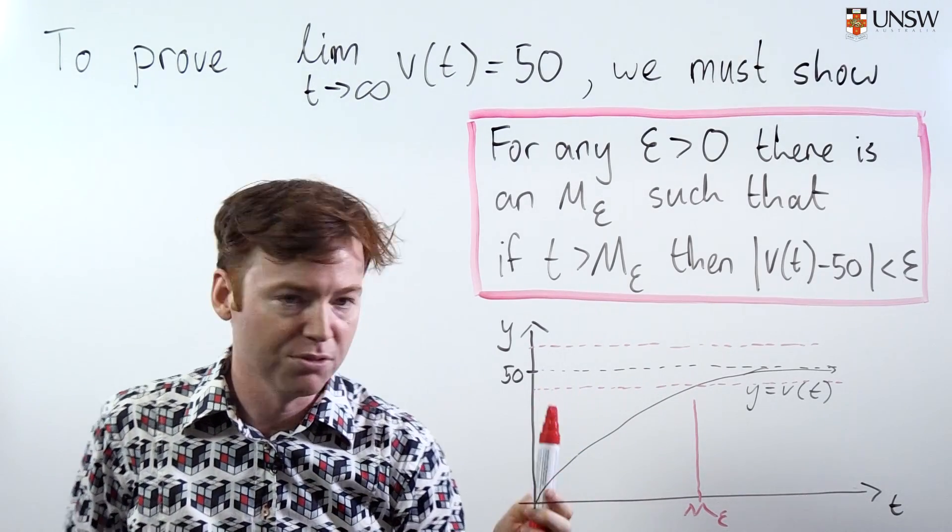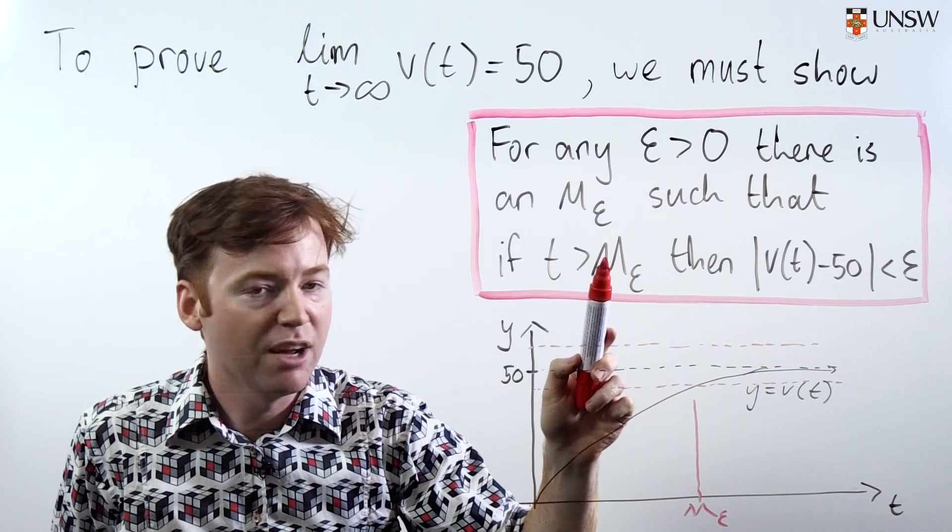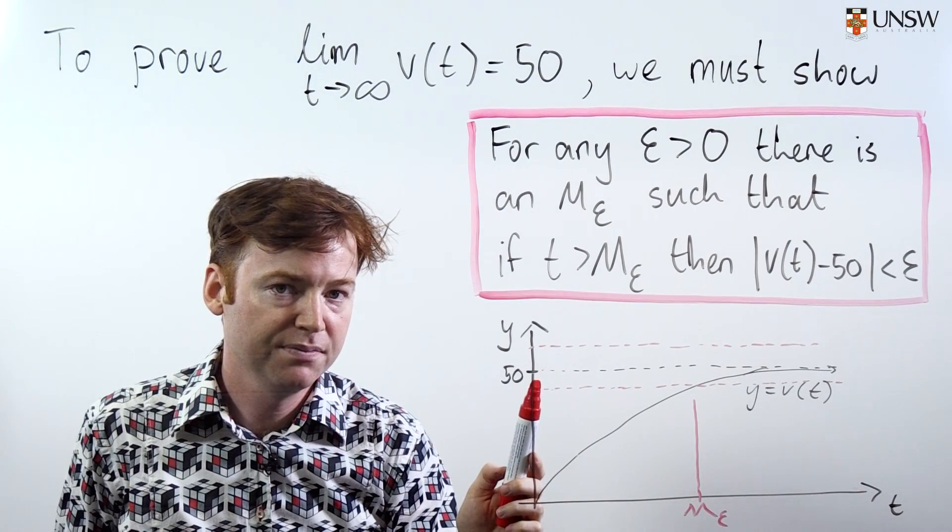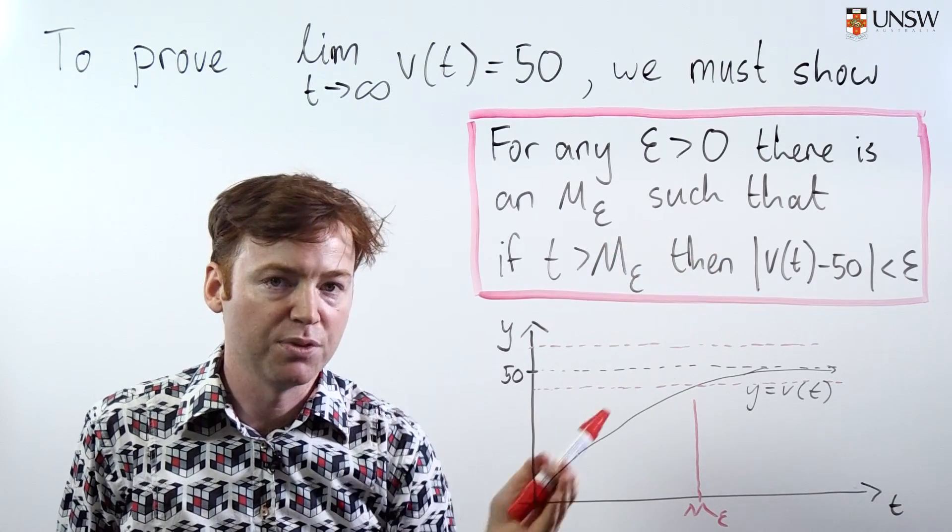The logic here is quite subtle, but important. What it's saying is that if you have big enough t, then you're guaranteed to be inside the sausage. So when we come to proving this, we need to make sure that we preserve this logical structure.